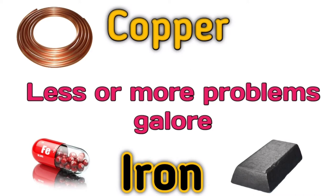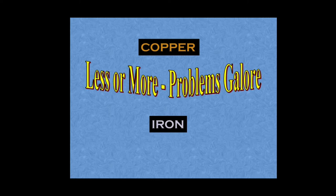In this session we will take a look at the toxic profile of two heavy metals that are a bit of a problem, because whether it is deficiency or excess, each of these two heavy metals will cause problems. We have to be very careful that we don't end up with less than what is required or more than what is required. That is why I have titled this particular episode 'Less or More — Problems Galore.' The two heavy metals being copper and iron.